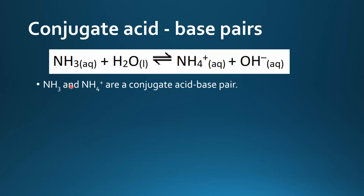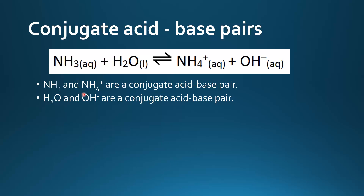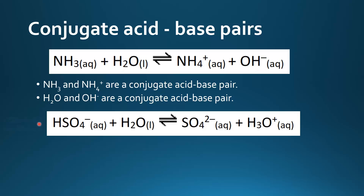So NH₃ and NH₄⁺ are a conjugate acid-base pair — they differ by one proton. H₂O and OH⁻ are also a conjugate acid-base pair; again, they differ by a proton.